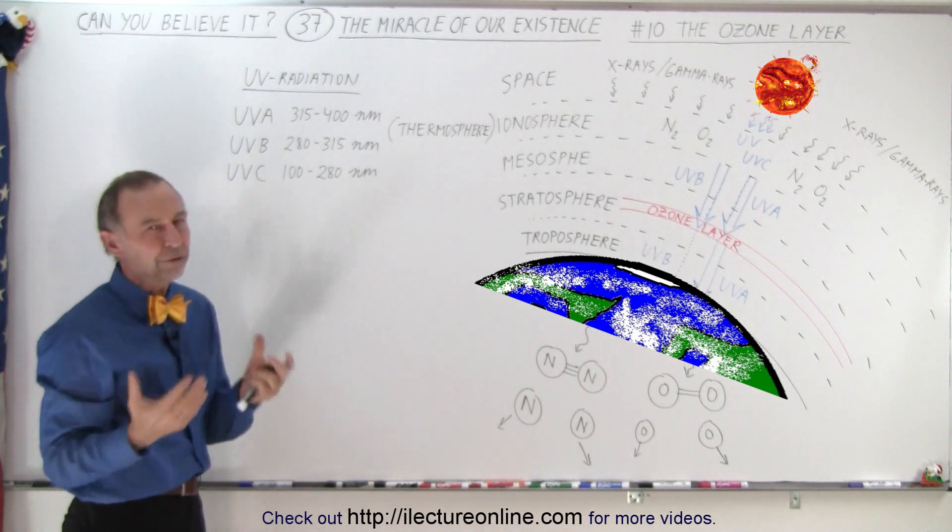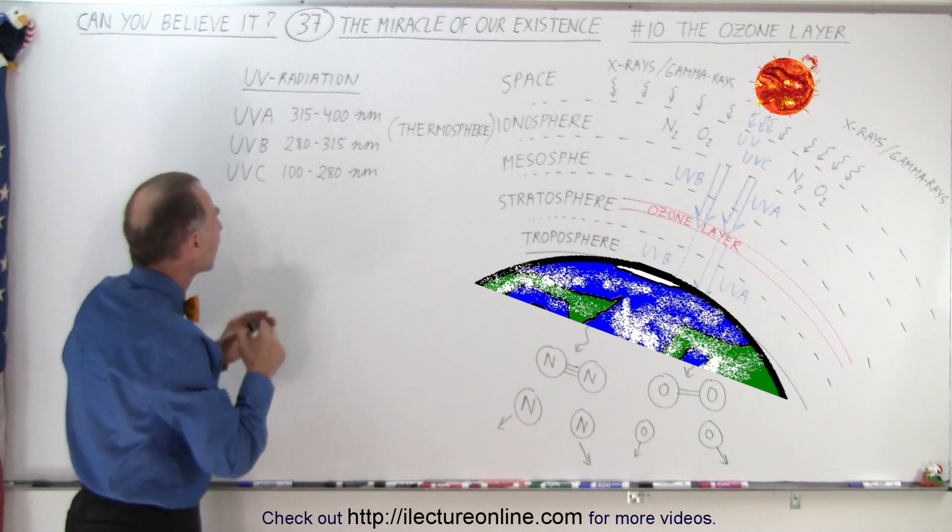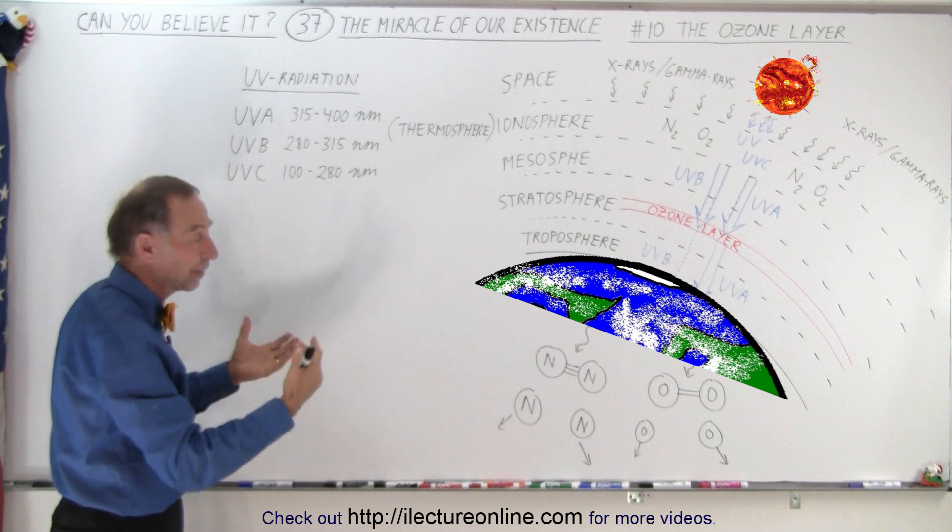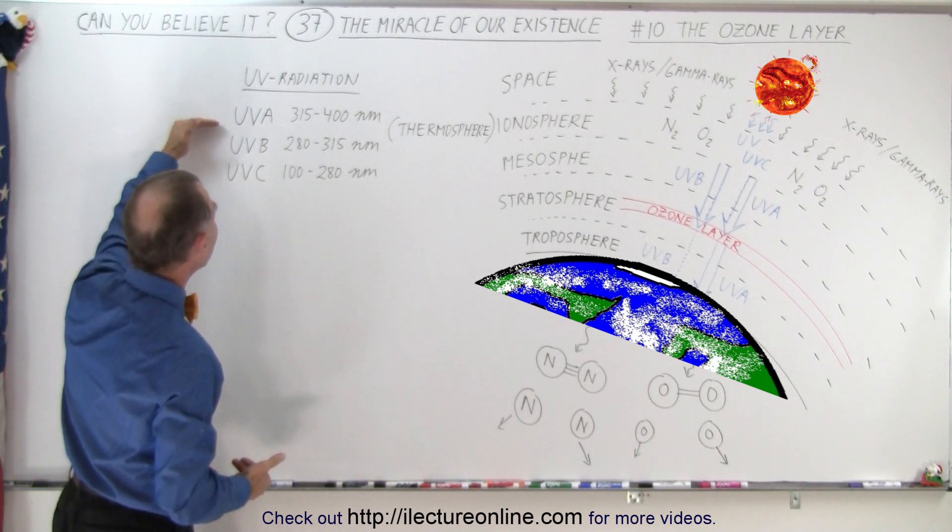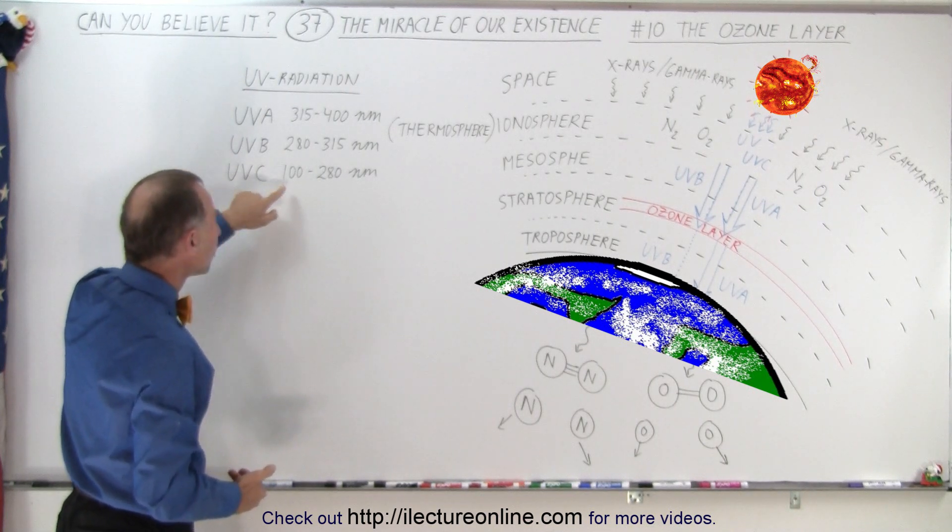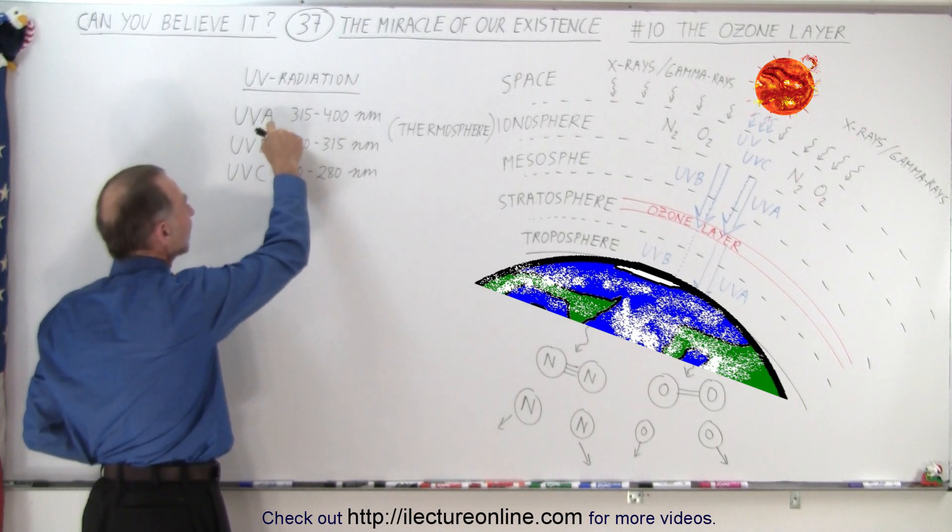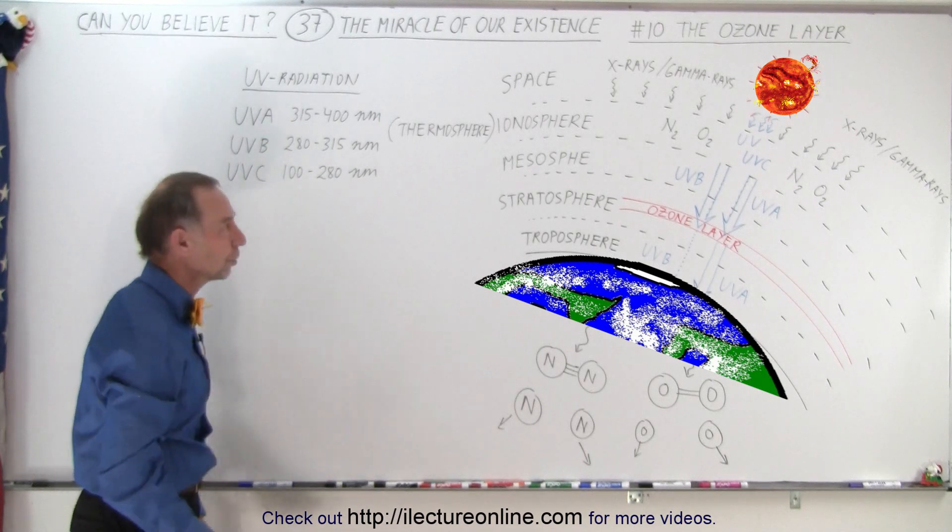UV radiation exists in three different types. It's all UV radiation, but we broke them up into three regions in the electromagnetic spectrum, because they do different things in our atmosphere and to our bodies. We have UVA, UVB, and UVC. UVC is much more energetic, because they have much smaller wavelengths. UVA is a lot less energetic with bigger wavelengths, and UVB is somewhere in between.